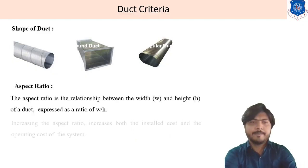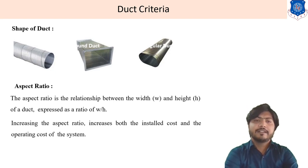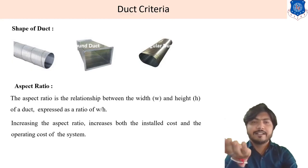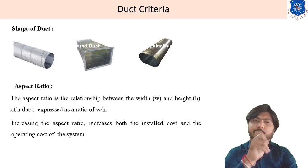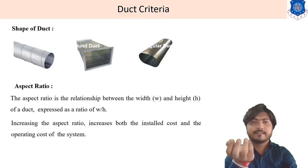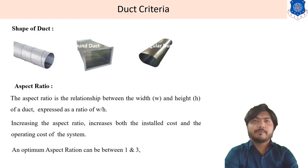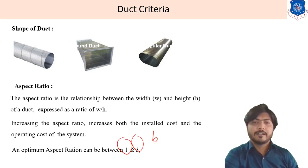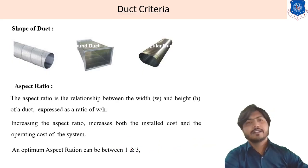Increasing the aspect ratio increases both the installation cost and operating cost of the system. The optimum aspect ratio is between 1 and 3, meaning the ratio W/H should be between 1 and 3.